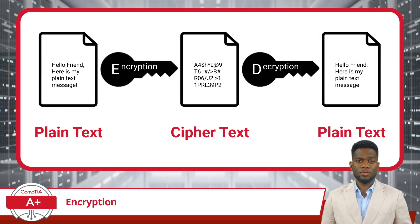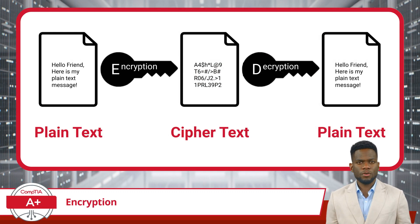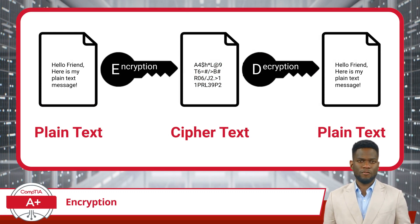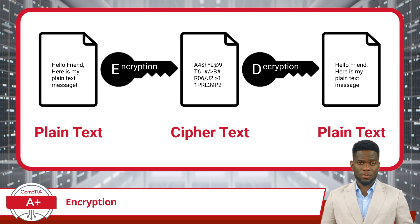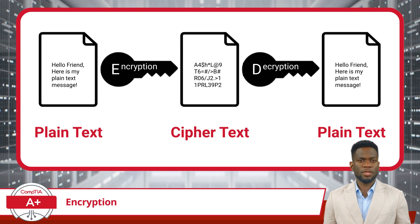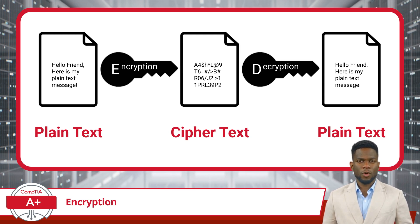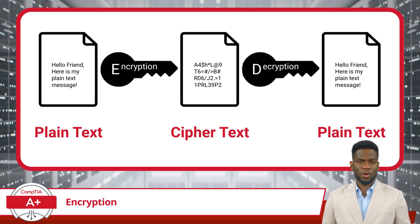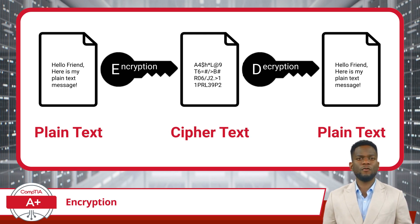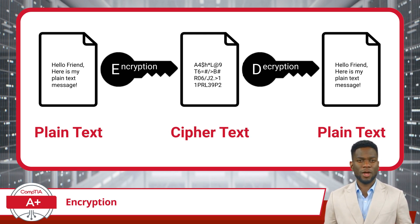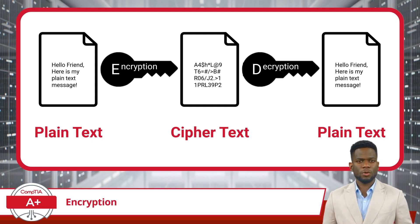As for ciphertext, it stands in stark contrast to plain text. It is the result of taking understandable, clear data and transforming it into a format that appears random and nonsensical at first glance. This transformation is achieved through a process called encryption, which employs an encryption key combined with a specific mathematical algorithm in order to jumble the original data. These algorithms rearrange the data in such a way that its original meaning becomes obscured.